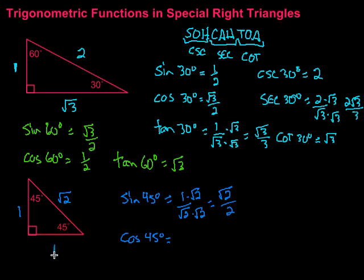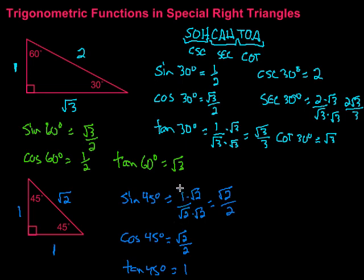The cosine of 45 degrees is similarly the adjacent over the hypotenuse — 1 over square root of 2, which also rationalizes to the square root of 2 over 2. The tangent of 45 degrees is opposite over adjacent, which is 1 over 1, equaling 1. We could also find the cosecant, secant, and cotangent by taking reciprocals, taking advantage of where the square root lands after flipping.